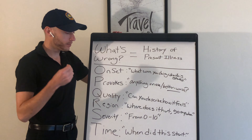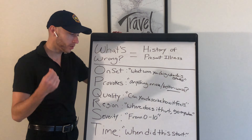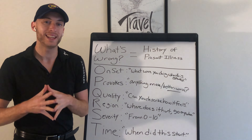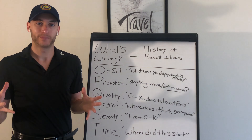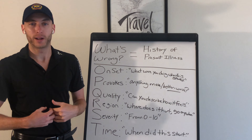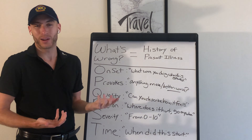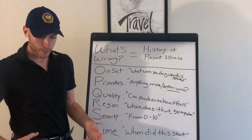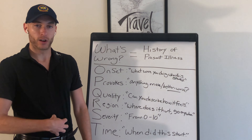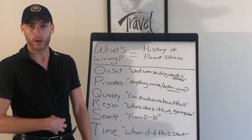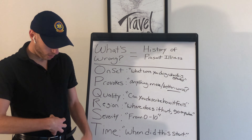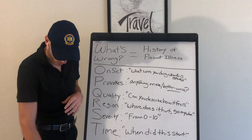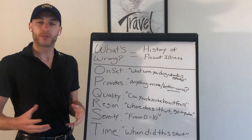R is region — where does it hurt and where does it go? I like to use the word 'radiates' because it's easier to remember. The patient has probably already told you the region, so really you're asking: does it go anywhere? Does it radiate? For example, pain in the middle of your stomach — does it go left or right, down or up? Pain in the femur — does it go down, or up into the hip?